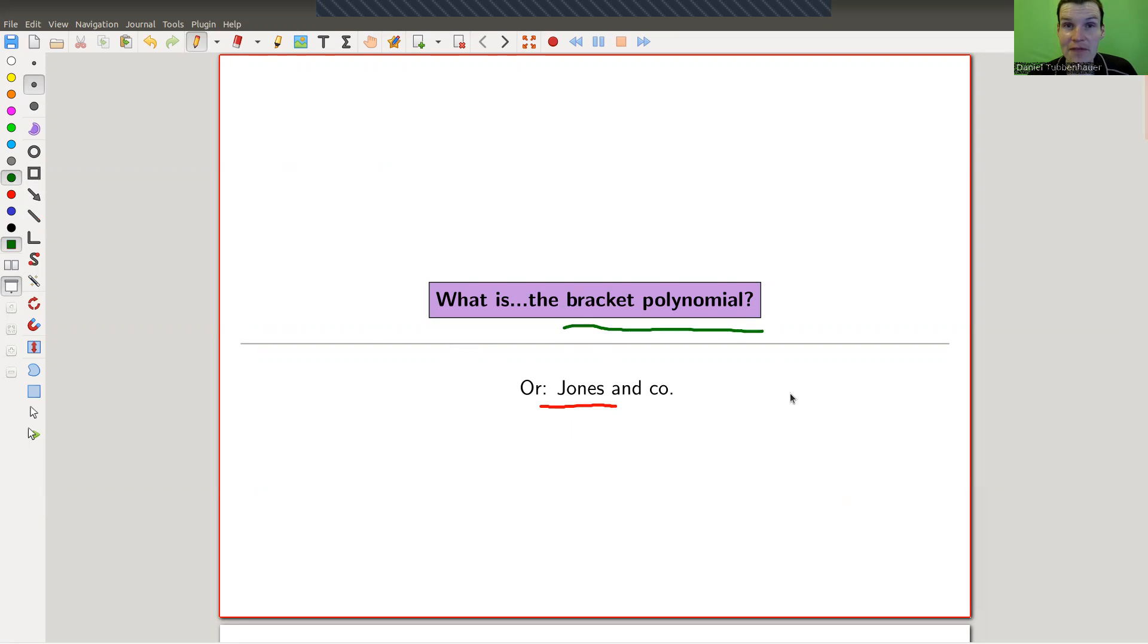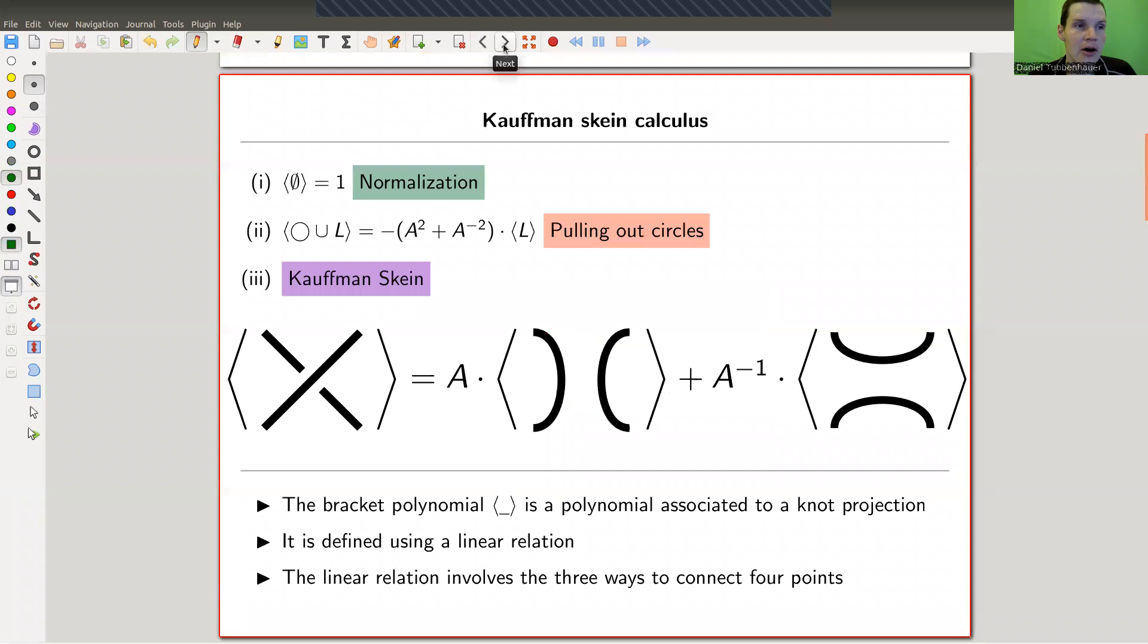It's again a polynomial invariant of knots. I will tell you the story a little bit when we come to the definition but first we just get started because it's so simple. It's kind of a back of the envelope calculation in the end. So here is the idea. Again, we use some local rule. Let's define what one could call the Kauffman skein calculus. I would like to associate a polynomial to a knot and the polynomial is called a bracket polynomial and it's denoted by a bracket.